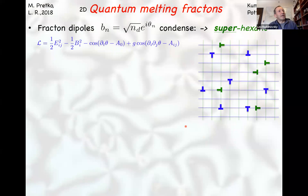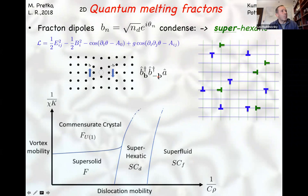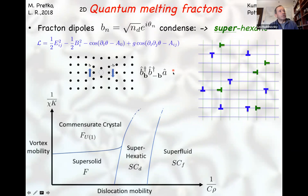This naturally brings us to phases and phase transitions. We developed a phase diagram where both types of dislocations unbind simultaneously, giving a phase transition from a crystal to a hexatic to a superfluid. Superfluiditity enters because once dislocations unbind, pairs of dislocations — which are vacancies and interstitials — can also condense. Whether these bosons condense or remain Mott insulating determines whether you get a commensurate crystal or a super-solid.